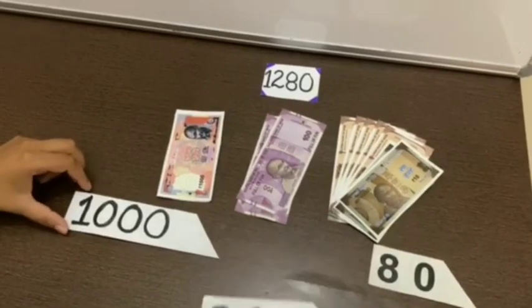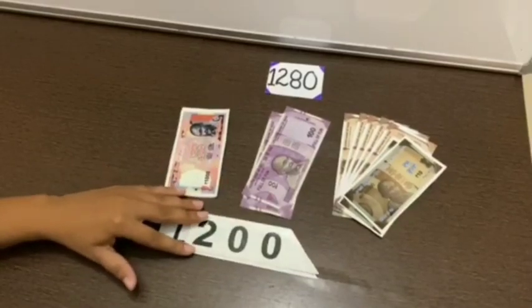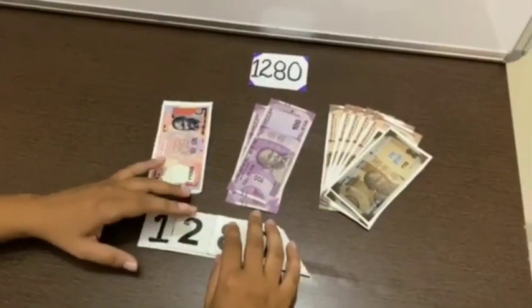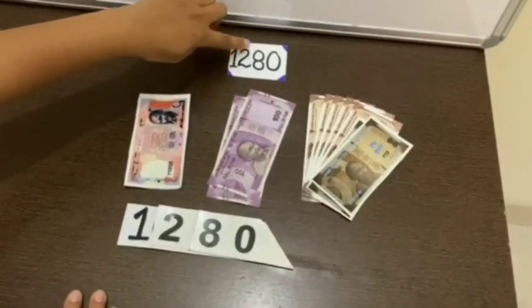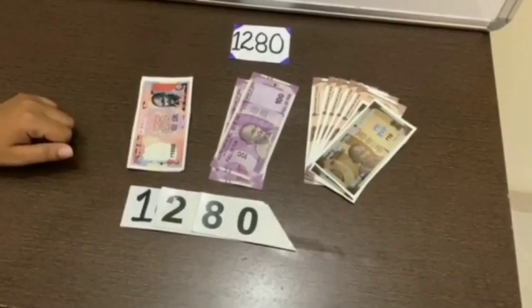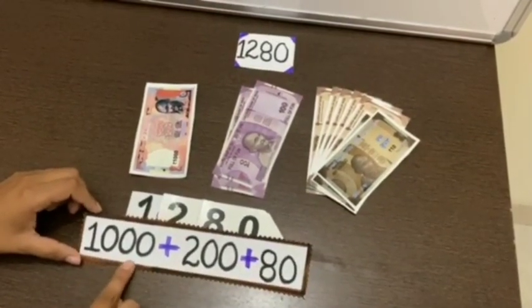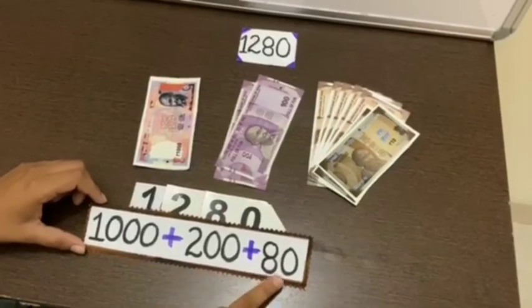So if we combine it again, we will get the same figure. So we get 1280. So in your answer, you will write it as 1000 plus 200 plus 80.